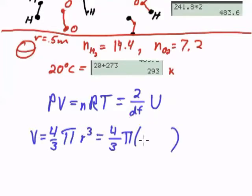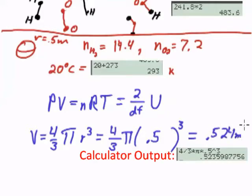which is 4 thirds pi times 0.5 meters cubed. And that would have to be 0.524 meters cubed.